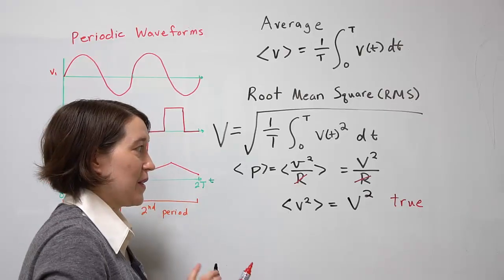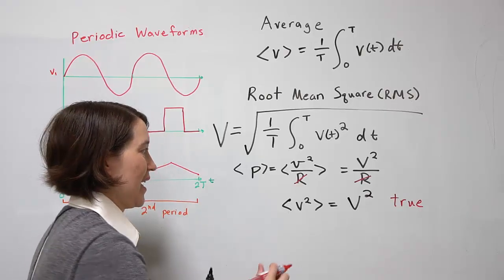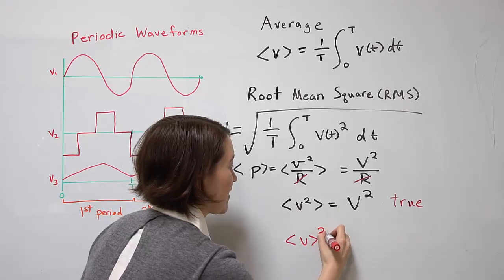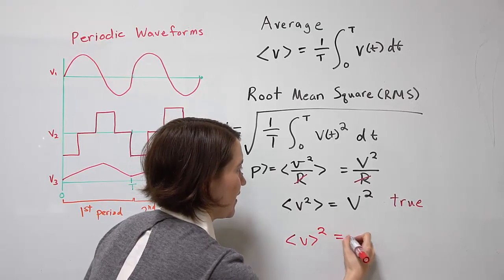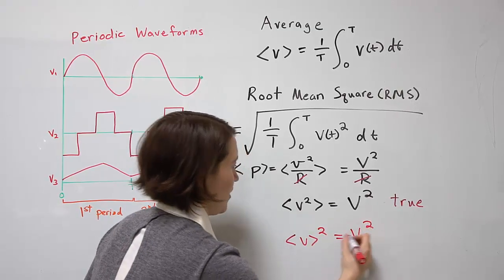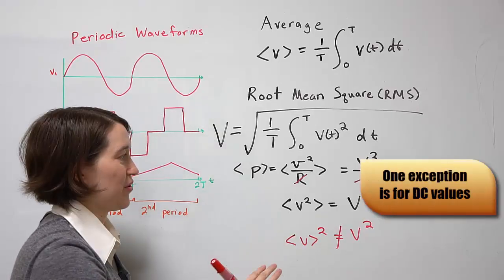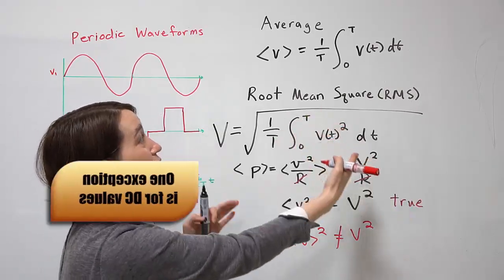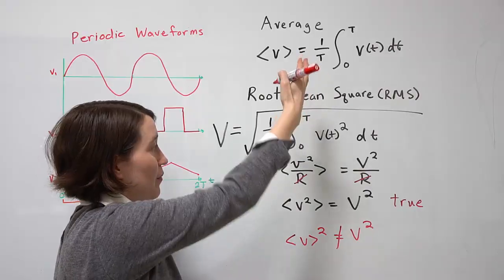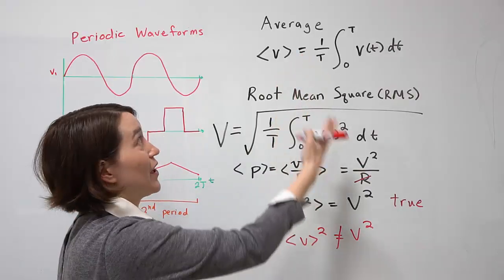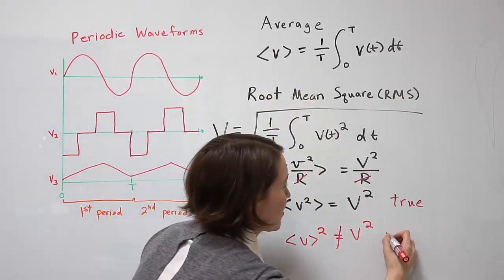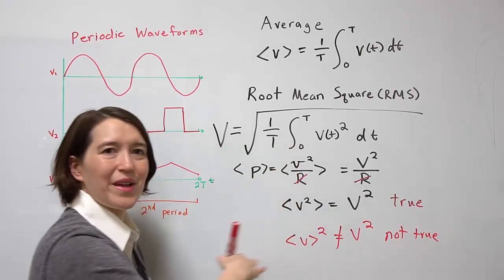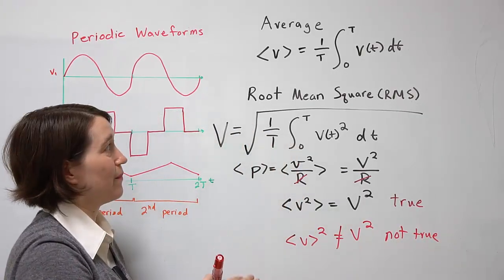Some students make this mistake — they will try to make the average of V equivalent to the RMS value. This is not true. The true relationship is that the average of V squared equals the RMS value squared, based on the definition of RMS in relation to the average. Do not try to make that incorrect relationship.